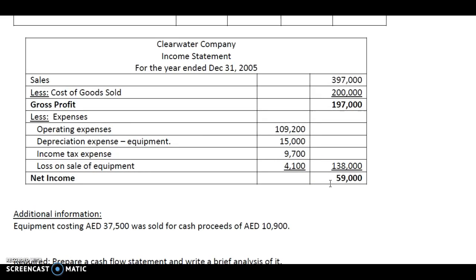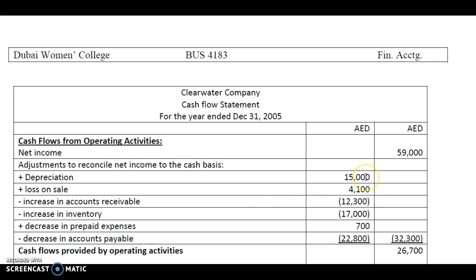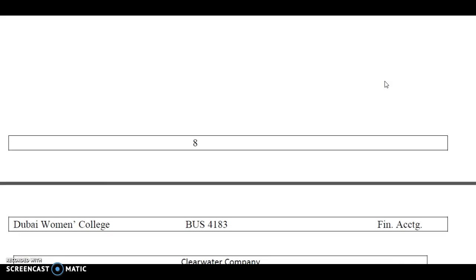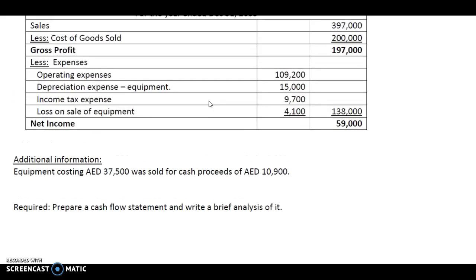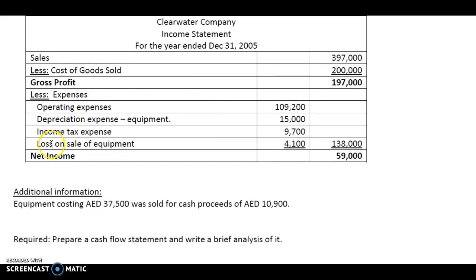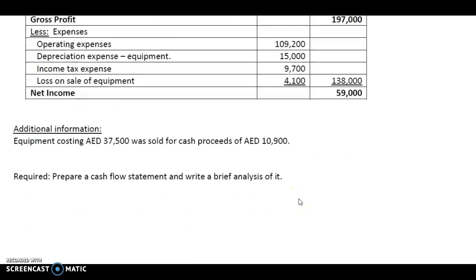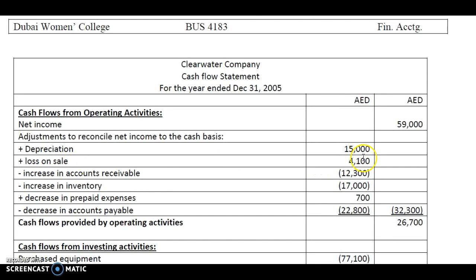Then you look for the non-operating expenses. The first of which is depreciation expense 15,000 — we will add this back to the net income. Now, you look for any non-operating gain or loss on the sale of non-current assets. In the additional information, they have given us that equipment costing 37,500 was sold for cash proceeds. Let's look at the income statement whether there has been a gain or a loss on sale. There has been a loss on sale of equipment of 4,100, which was deducted from the gross profit to arrive at the net income. Since this is a non-operating loss, we add it back to the net income. As you can see here: add loss on sale 4,100.